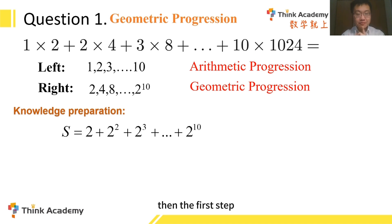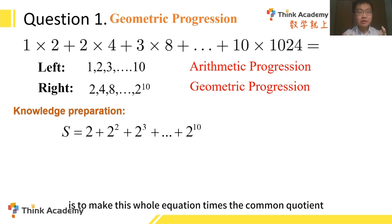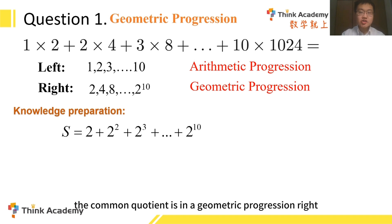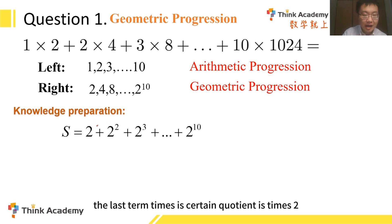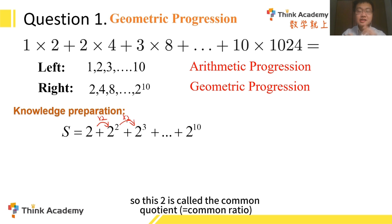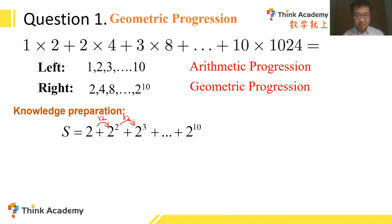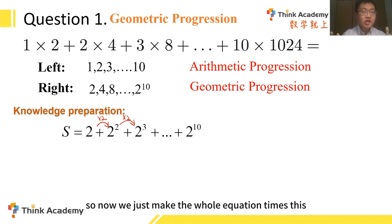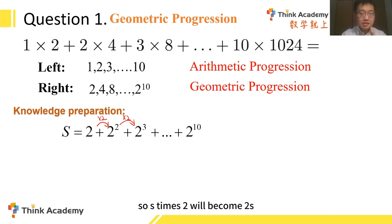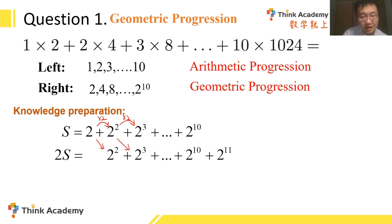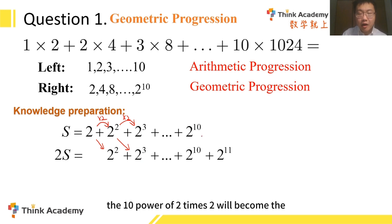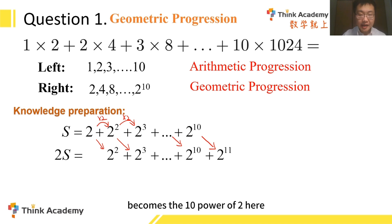The first step is to multiply the whole equation by the common quotient. In a geometric progression, each term is the last term times a certain quotient — it's times 2 each time. So 2 is called the common quotient. We multiply the whole equation by 2, so s times 2 becomes 2s. Then 2 times 2 is 2², 2² times 2 becomes 2³, and so on until 2¹⁰ times 2 becomes 2¹¹. So this is the first step.